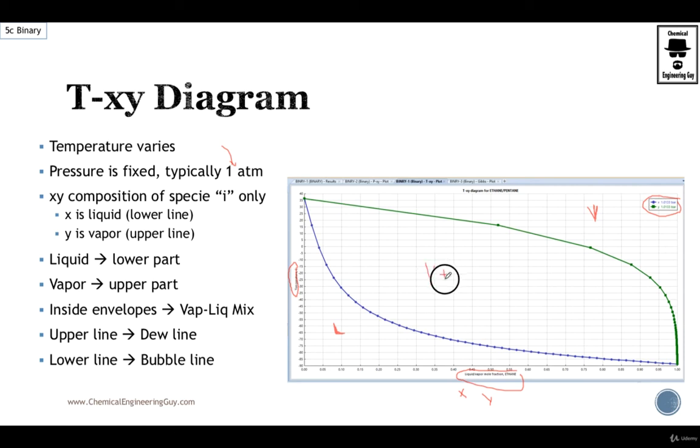And in between you have a vapor-liquid mix. Important lines will be the green one, which is the dew line. Which implies that whenever the compound exceeds this line, you will be forming condensate or drops of the mixture.